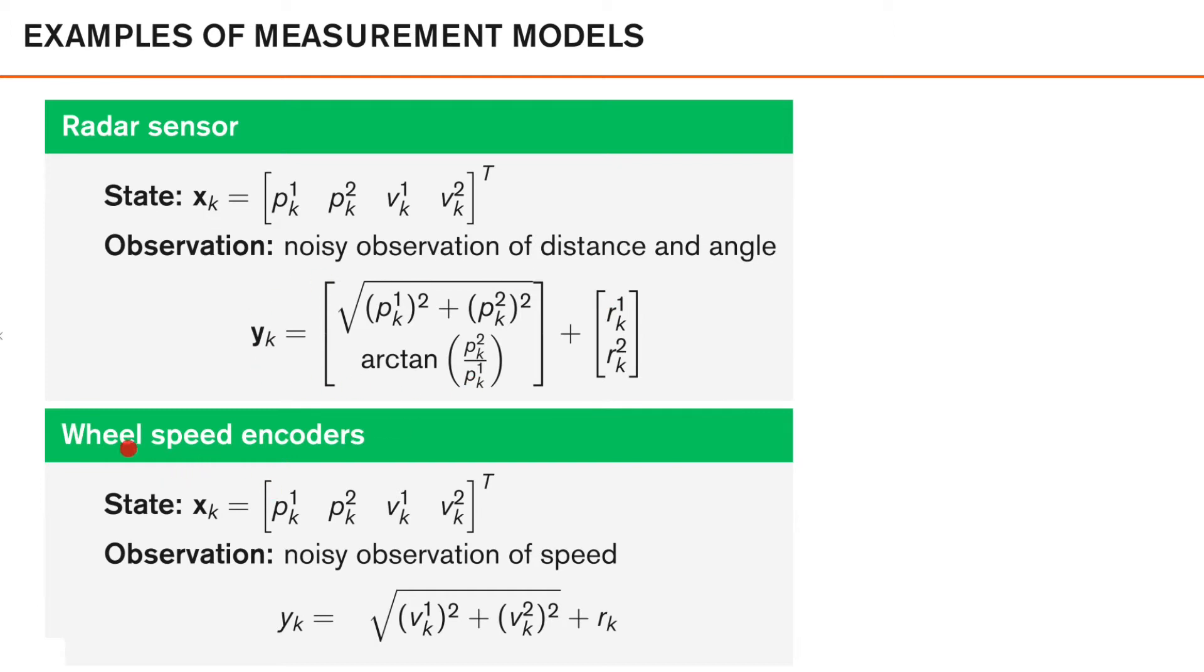As a fourth example, we could look at wheel speed sensors or wheel speed encoders. In this case, I'm assuming that we have a constant velocity model such that the state vector has the following parametrization. Now, a wheel speed sensor measures the speed of a vehicle by first measuring how many revolutions the wheel makes in a second. Assuming that the circumference of the tire is known, the speed of the vehicle is then given by the product of the number of revolutions per second times the tire's circumference. This would then give a noisy observation of the speed, and that means that the measurement model could be yk equal to the square root of v1 squared plus v2 squared plus some noise, where this expression here is the speed of the object.